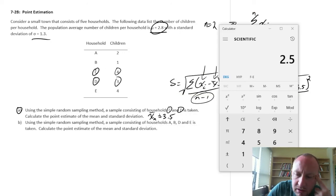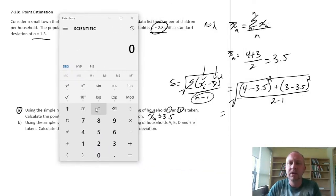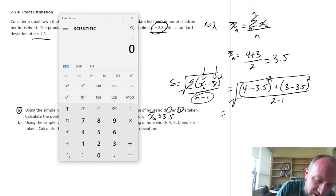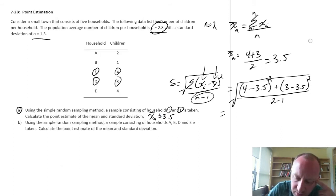So here, let's get the calculator. We only have a small sample, so I can probably do this in one stretch. So 4 minus 3.5, squared plus, 3 minus 3.5, square that. So there's a quarter plus a quarter, so there's the numerator, 0.5, divided by 2 minus 1, so divided by 1, and take the square root of that. That's going to round to about 0.71.